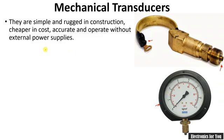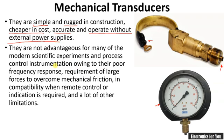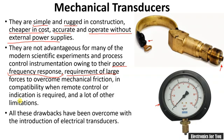This type of Bourdon tube is generally used in a pressure gauge for measuring tire pressure. Mechanical transducers are simple and rugged in construction, cheaper in cost, accurate, and operate without an external power supply. However, their disadvantages include poor frequency response, meaning they are slower, and they require large forces to overcome mechanical friction. They are also incompatible when remote control or indication is required.